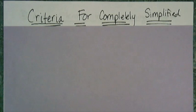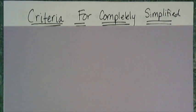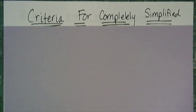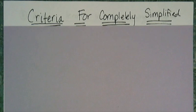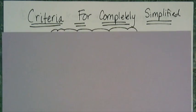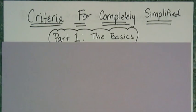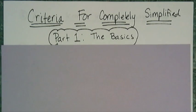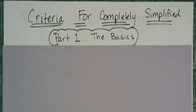We're going to talk about what it means to be completely simplified — the criteria that your solutions and answers need to meet when I ask you to simplify something. This is just part one, the basics, and the basics pertain primarily to things that are linear.